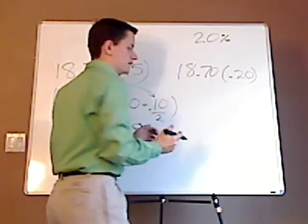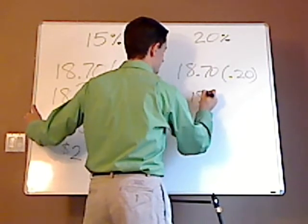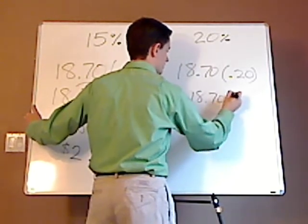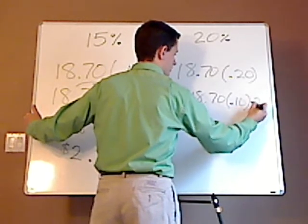And to do it mentally, you're actually doing this. You take the 18.70, 0.10 times it by 2.